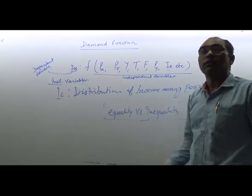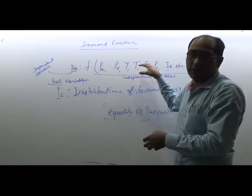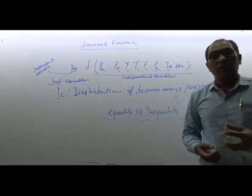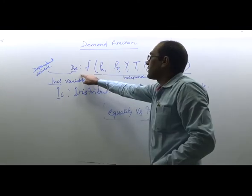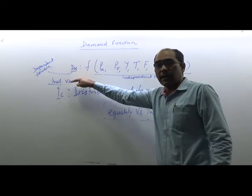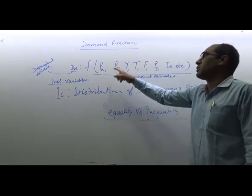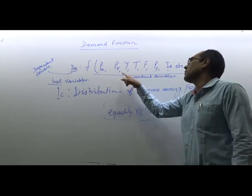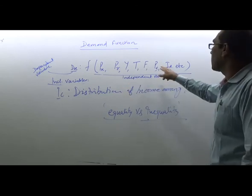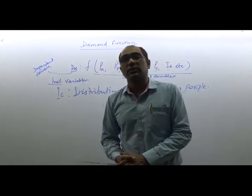For our syllabus, these factors are sufficient. Demand function is a functional relation between a dependent variable and independent variables. The dependent variable is DX — demand for good X — and the independent variables include price of the good, price of related goods (substitute and complementary), income of the consumer, taste and preferences, future expectations, population composition, and distribution of income. In the next class, we will discuss the law of demand.